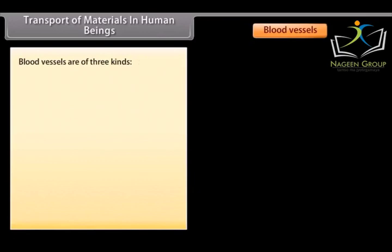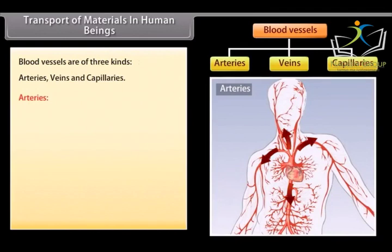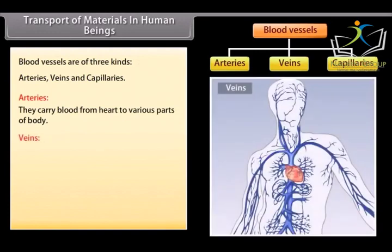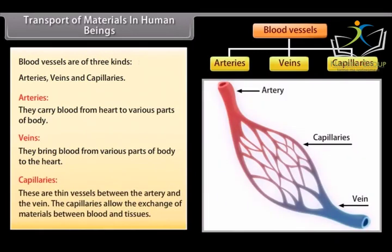Blood vessels are of three kinds: Arteries carry blood from heart to various parts of the body. Veins bring blood from various parts of the body to the heart. Capillaries are thin vessels between the artery and the vein. The capillaries allow the exchange of materials between blood and tissues.